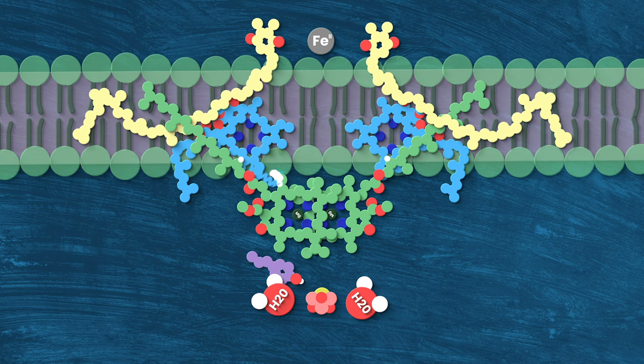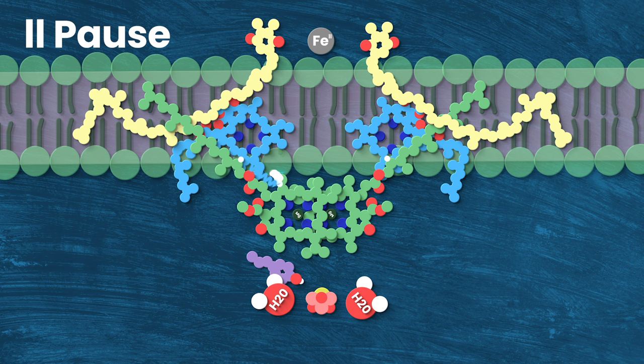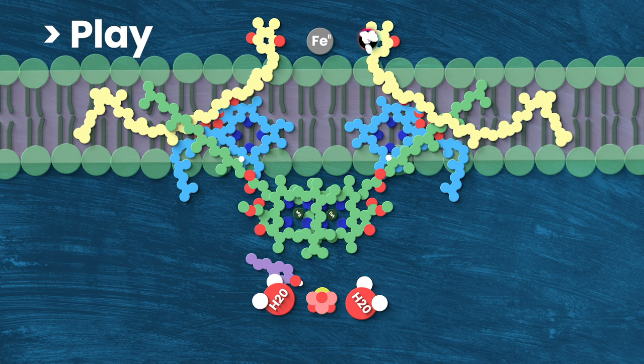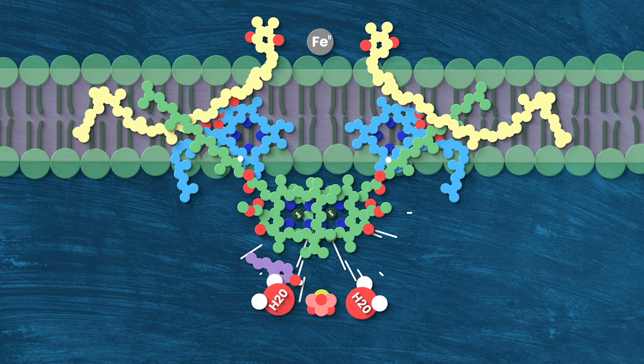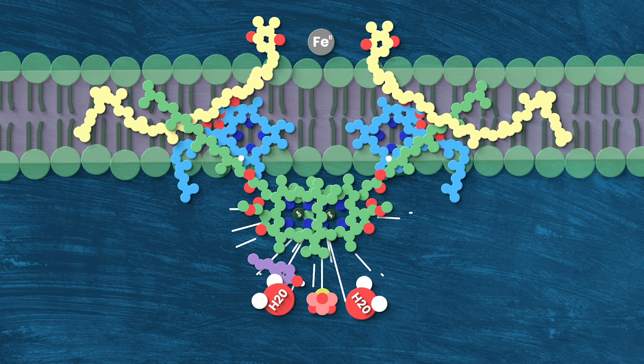And then, a photon of just the right wavelength hits P680 or one of its antenna complexes. If the light hits an antenna chlorophyll, the energy cascades down to P680. That energy excites an electron in P680 and flings it up to the top right of the reaction center over here. Now, this process is incredibly fast, but I'm going to slow things way down here to give you a better view of how this works.